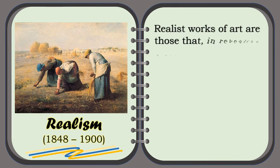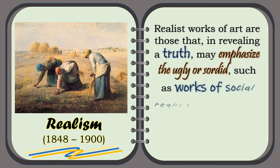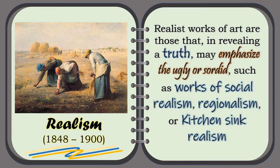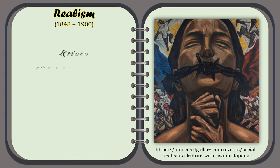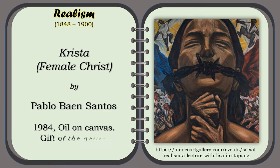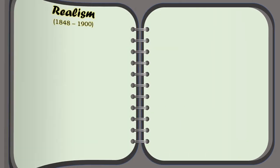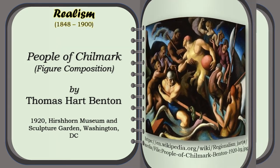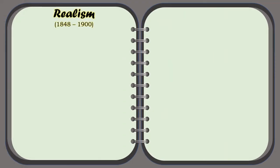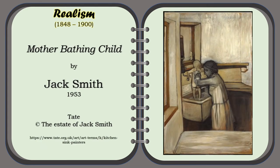Realist works of art are those that, in revealing a truth, may emphasize the ugly or sordid, such as works of social realism, regionalism, or kitchen sink realism. For example of social realism, the painting of Pablo Ben Santos, oil on canvas in 1984, entitled Christa, the Female Christ. Example of regionalism by Thomas Hart Benton, entitled The People of Chilmark, Figure Composition, in 1920, found in the Hirshhorn Museum and Sculpture Garden, Washington D.C. An example of kitchen sink realism by Jack Smith in 1953, entitled Mother Bathing Child.